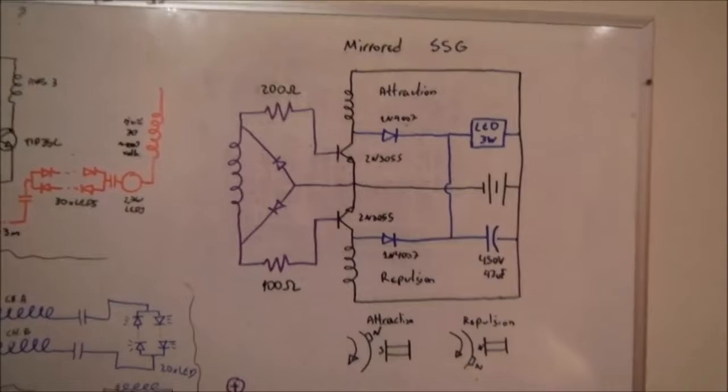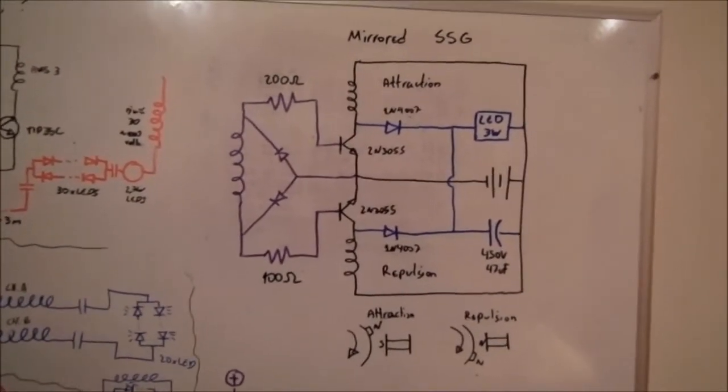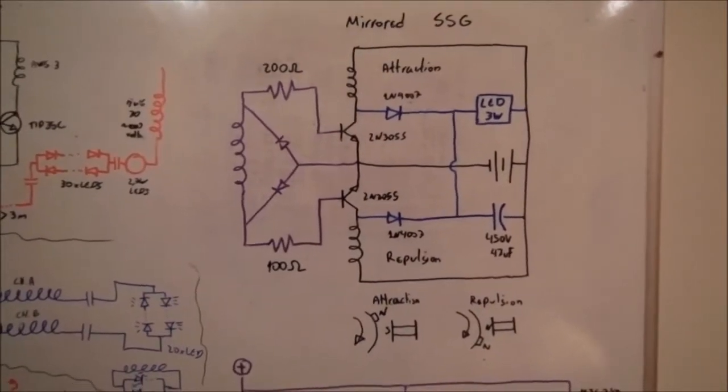This is an update for the Pulse Motive build-off project. I am finally using another type of circuit. I call this circuit the mirodet SSG.